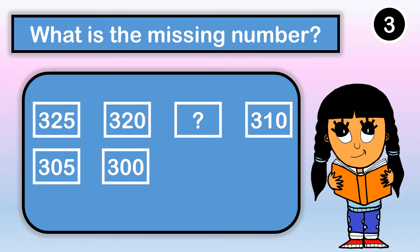What is the missing number? Three hundred twenty-five, three hundred twenty, then our missing number, three hundred ten, three hundred five, three hundred. It looks like we are skip counting by five, so our missing number is three hundred fifteen.